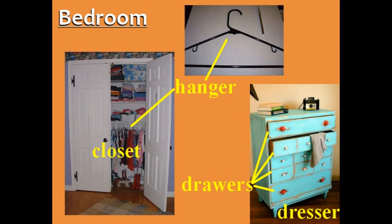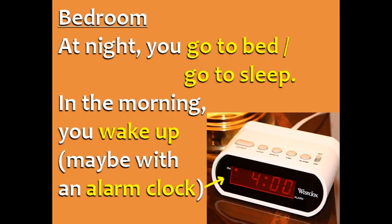You keep your clothes in a closet, on hangers, or in a dresser, inside the drawers. At night, you go to bed or go to sleep, and in the morning, you wake up, maybe with an alarm clock.